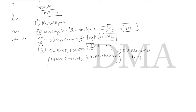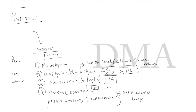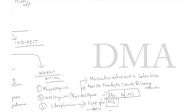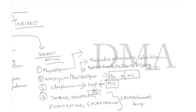Neostigmine and pyridostigmine are the drugs of choice for post-operative paralytic ileus, post-operative urinary retention, and as muscle relaxant reversal in cobra bite. Physostigmine is the drug of choice for belladonna poisoning.